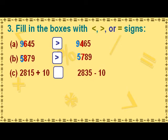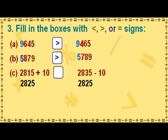The first number becomes 2825 when we add 10 to 2815. The second number also becomes 2825 when we subtract 10 from 2835. Since the place values of all the digits in both numbers become the same, both numbers become equal to each other, and we put the equal to sign in between them.